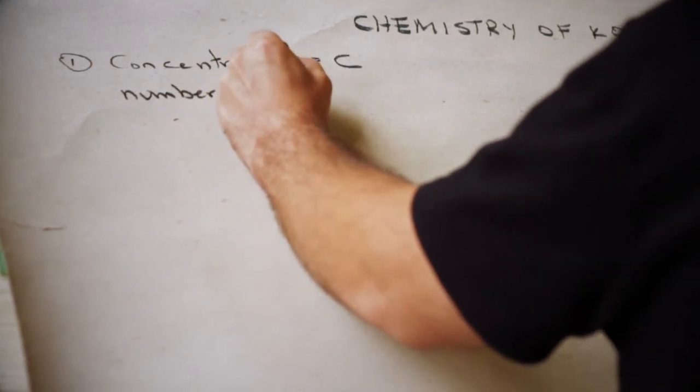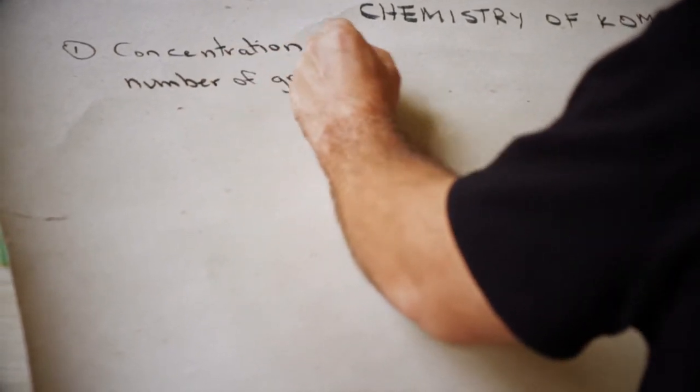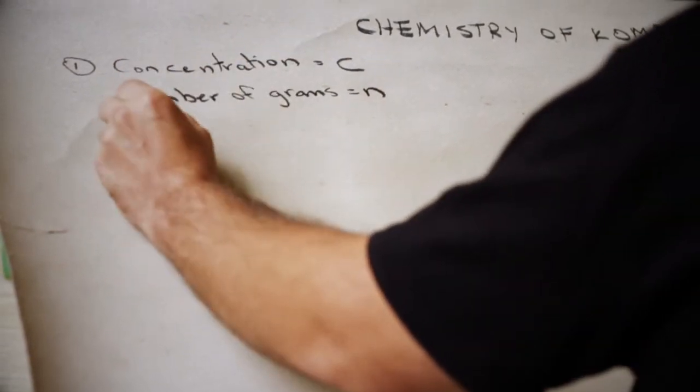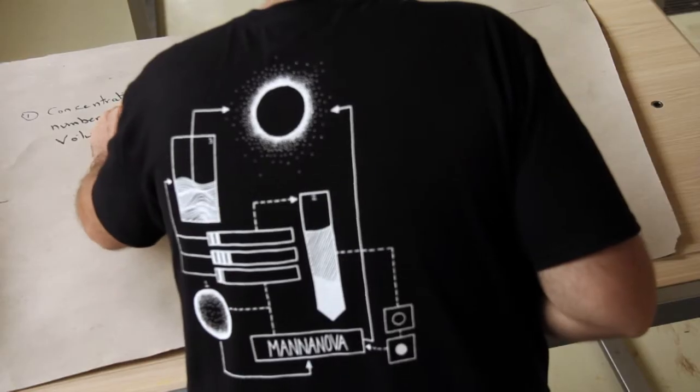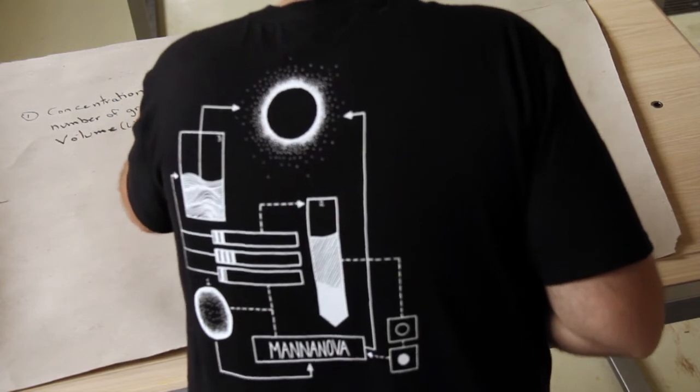So concentration, which we're going to call C here, is the number of grams, or n, in a given volume. We'll call it liters. We'll be working with liters today, and we'll call that V.